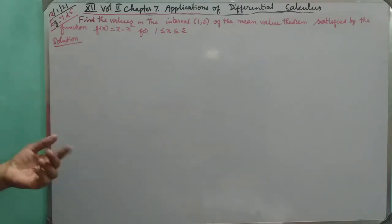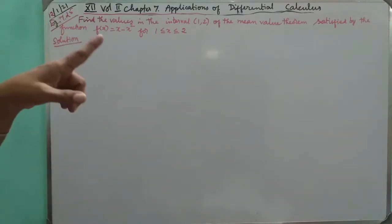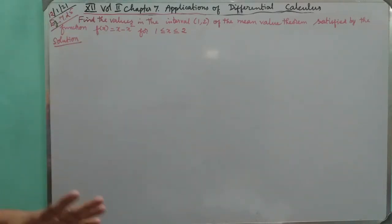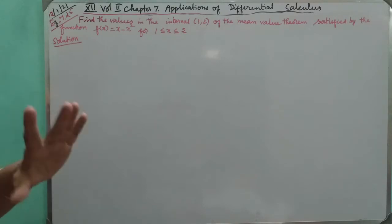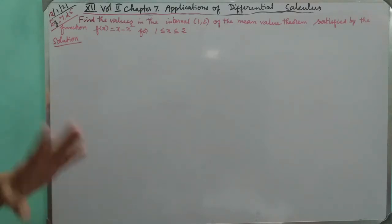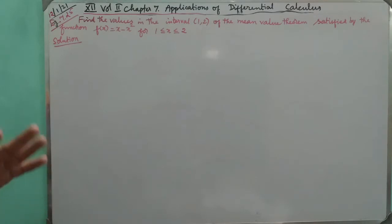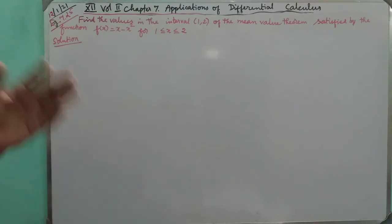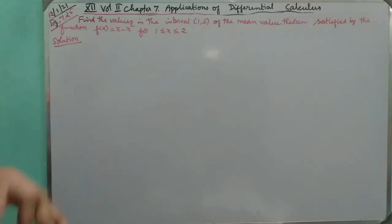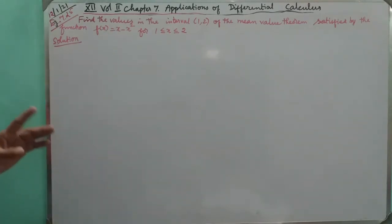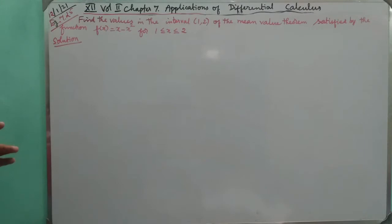First, we talked about the mean value theorem. The hypothesis will be correct — we have to see the two main conditions. So, we can talk about the mean value theorem.